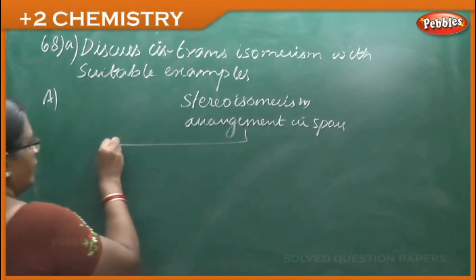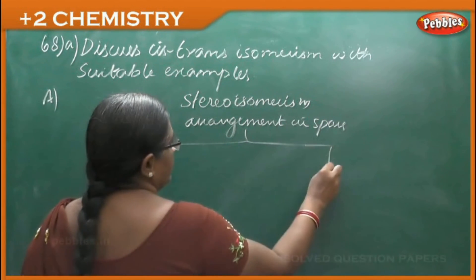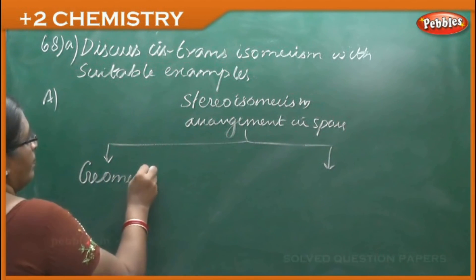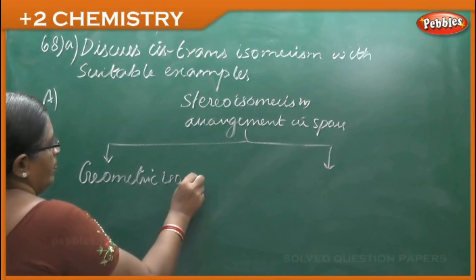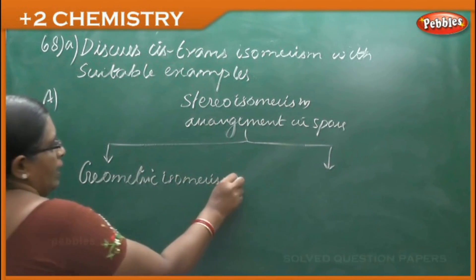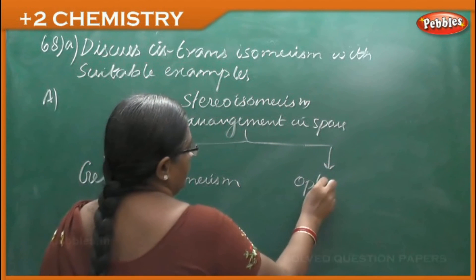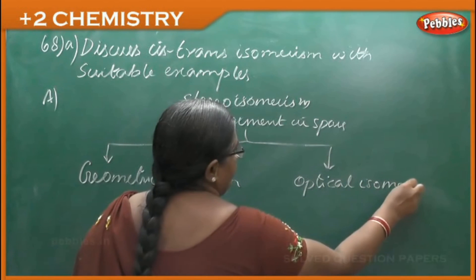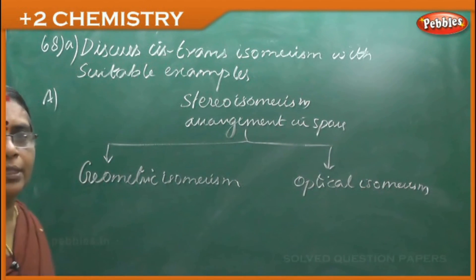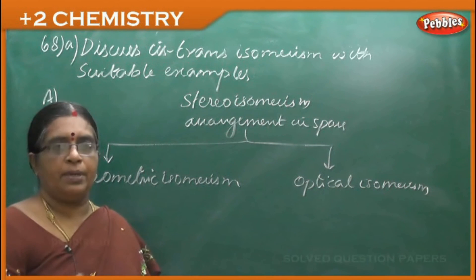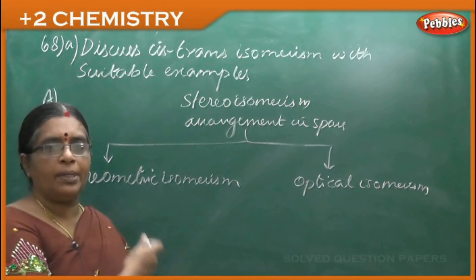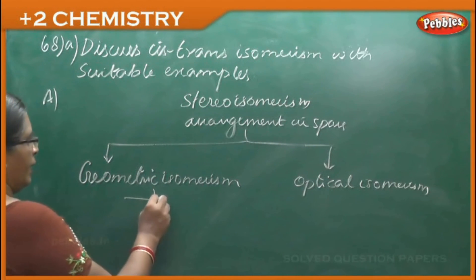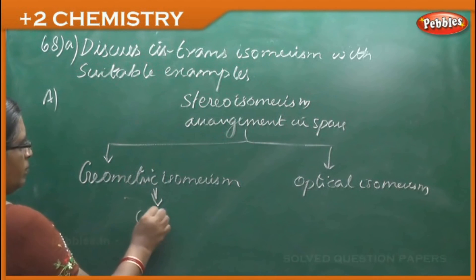Stereoisomerism is again divided into two types: geometric isomerism and optical isomerism. In geometric isomerism, we mainly read about cis-trans isomerism.